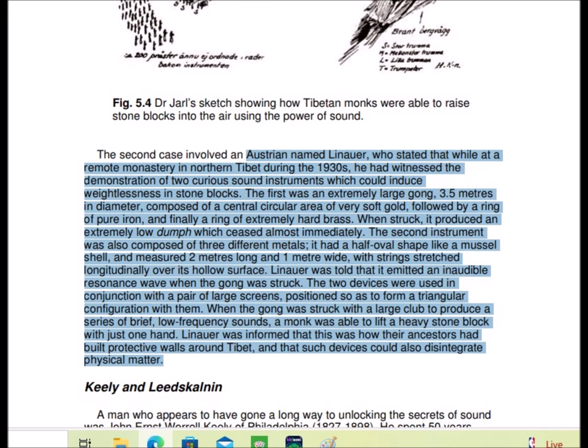When struck, it produced an extremely low thump which ceased almost immediately. The second instrument was also composed of three different metals. It had a half-oval shape like a mussel shell and measured two meters long and one meter wide with strings stretched longitudinally over its hollow surface. Linauer was told that it emitted an inaudible resonance wave when the gong was struck.